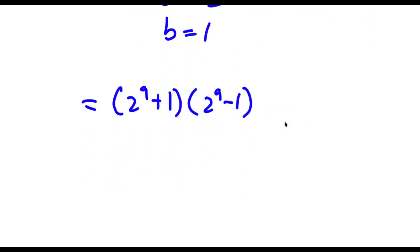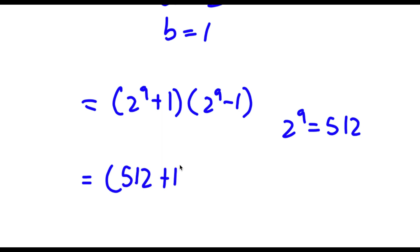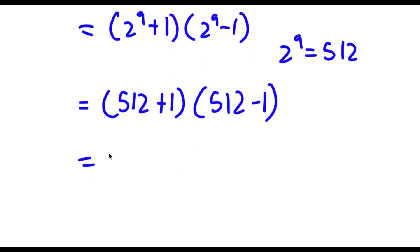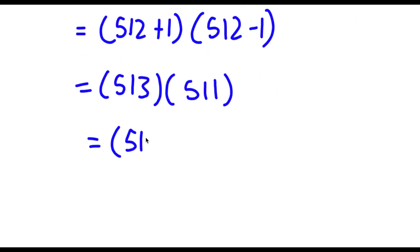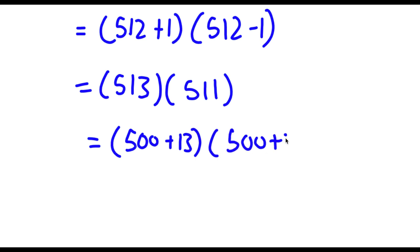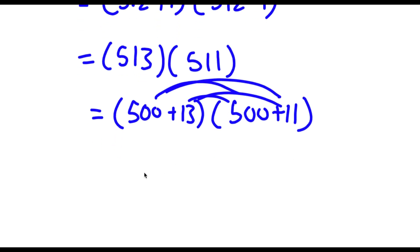So now, 2 to the power of 9 is equal to 512. So now I have (512 plus 1) times (512 minus 1). Now 512 plus 1 is 513 and 512 minus 1 is 511. Now I'm going to rewrite this as (500 plus 13) times (500 plus 11). To solve this I'm going to simply distribute the 500 and then distribute the 13.